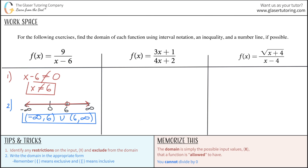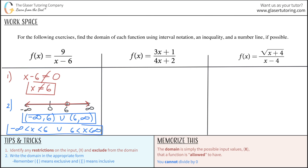Now for the inequality, we build off of the interval notation. It can go from negative infinity less than x less than 6, not inclusive of either. Or — using the union symbol — it could be 6 less than x less than positive infinity. So this works for your inequality notation.